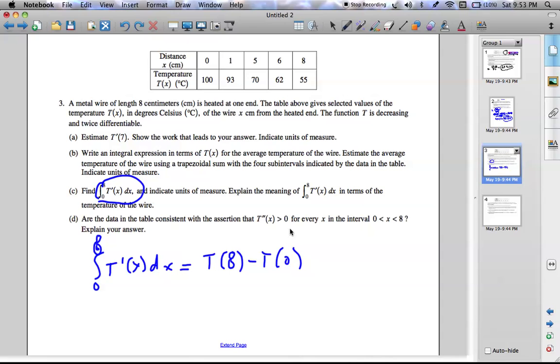And we know these functions because they're right here. So t of 8 is 55 degrees Celsius minus t of 0, which is 100 degrees Celsius, equals negative 45 degrees Celsius.